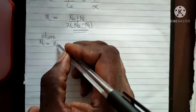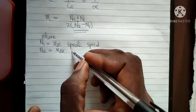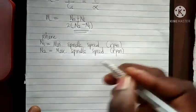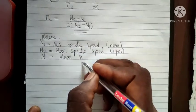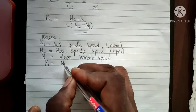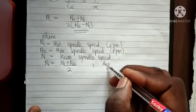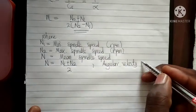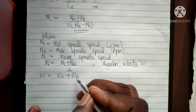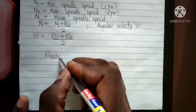Here, N1 equals the minimum spindle speed and N2 equals the maximum spindle speed, both in RPM (revolutions per minute). The mean spindle speed N = (N1 + N2) / 2. Similarly, in terms of angular velocity, the mean angular velocity ω = (ω1 + ω2) / 2.